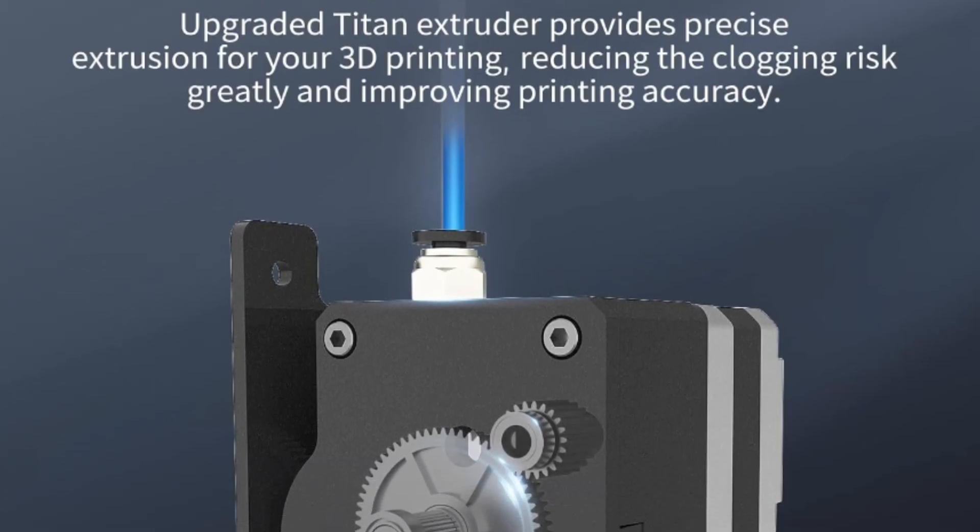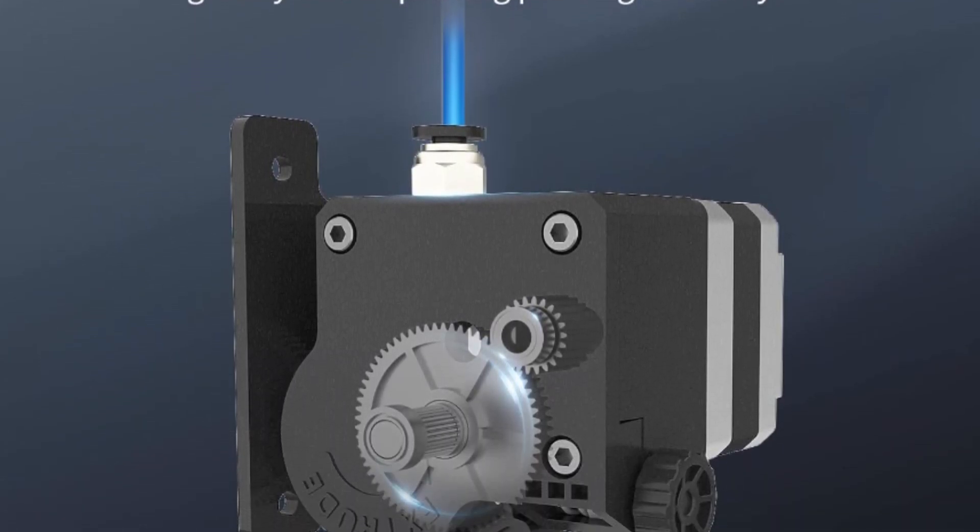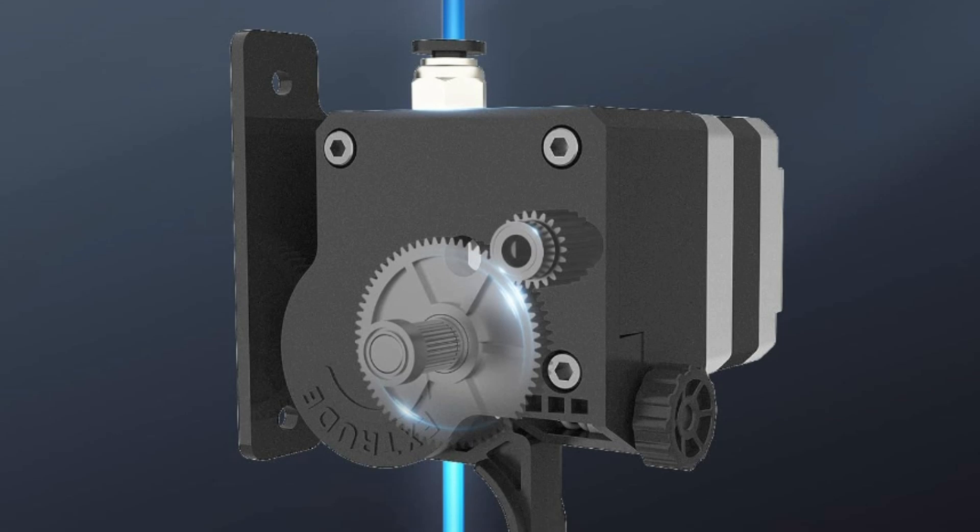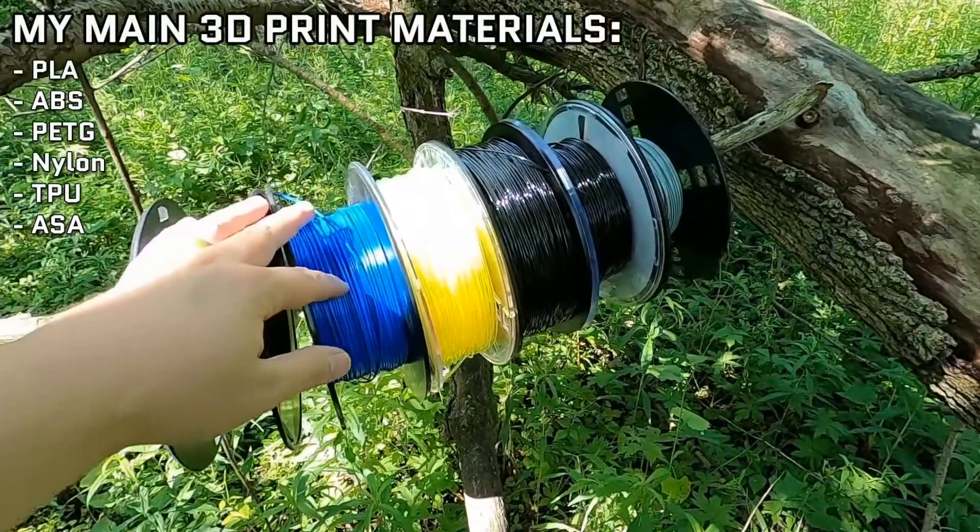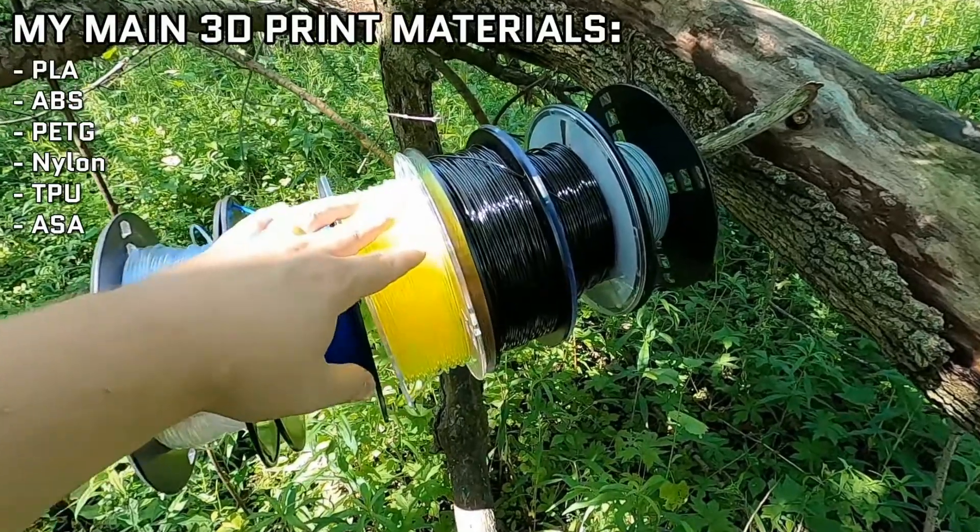The Titan extruder design ensures precise extrusion, reducing the risk of clogging and enhancing printing accuracy. It is compatible with multiple filament types, including TPU, PLA, ABS, HIPS, and wood.